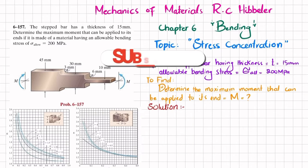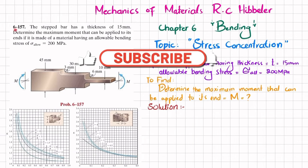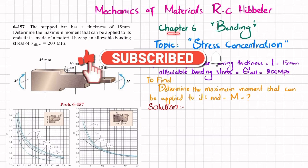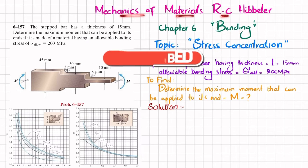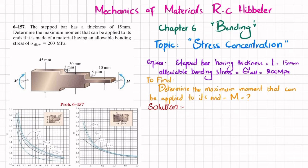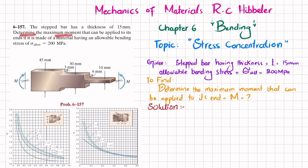Welcome back. Problem 6-157, taken from chapter 6 on bending from the book Mechanics of Materials by R.C. Hibbeler. The topic we are covering is stress concentration. The statement is: the step bar has a thickness of 15 millimeters — determine the maximum moment that can be applied to its end.